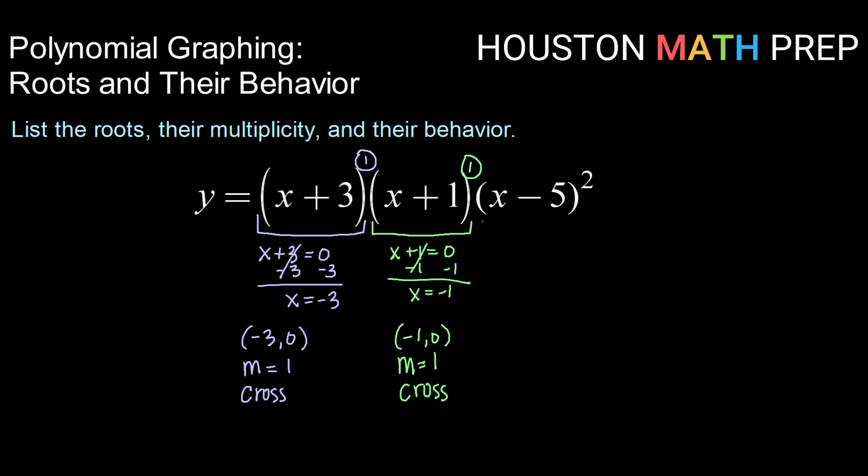And finally, taking our third factor and setting it equal to 0, so x minus 5 equals 0. Solving for x, we get that x equals 5, so we have a root at (5, 0).